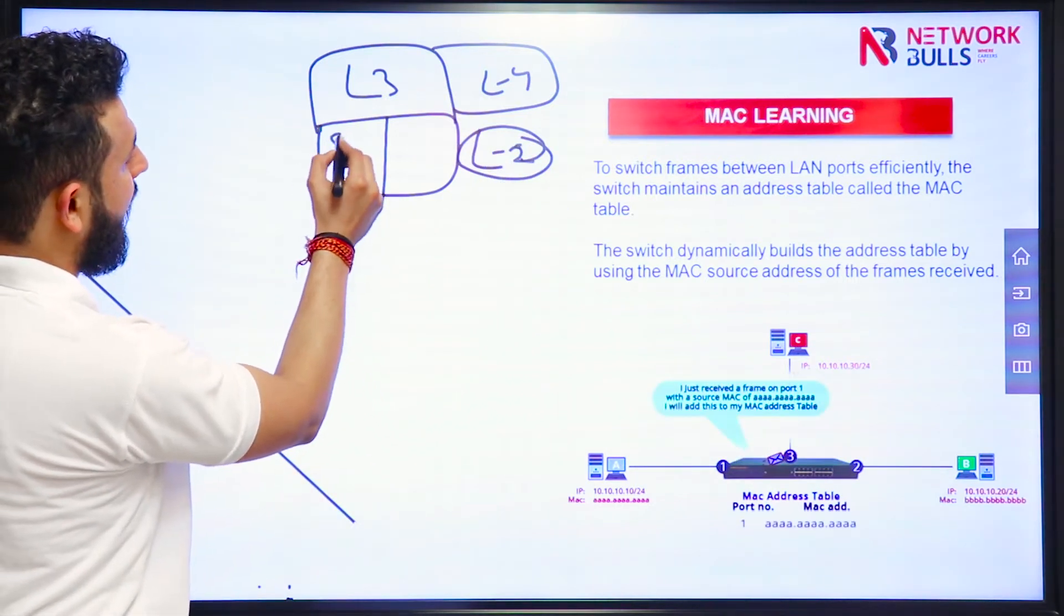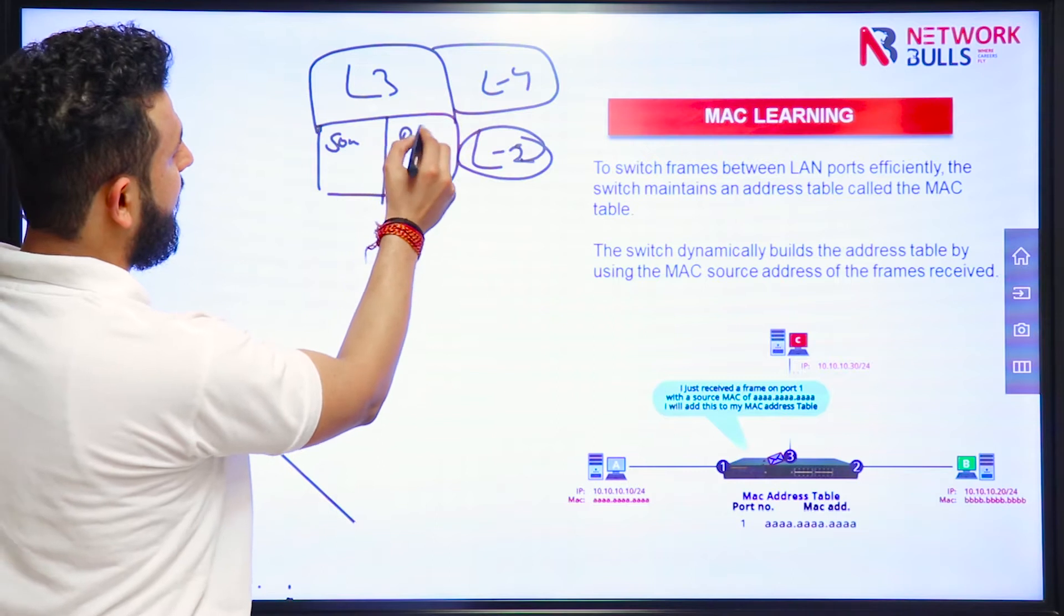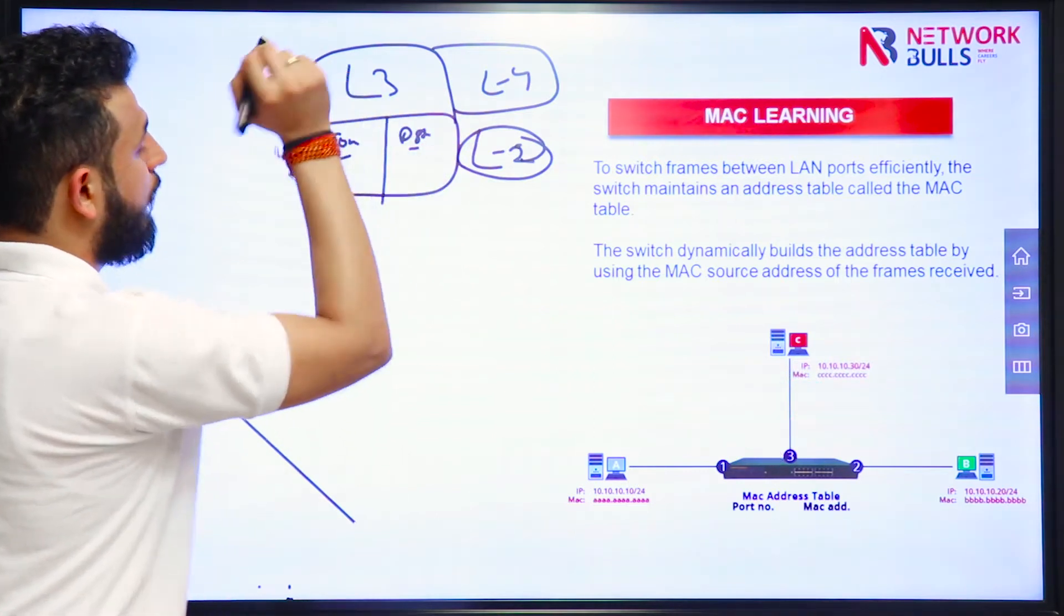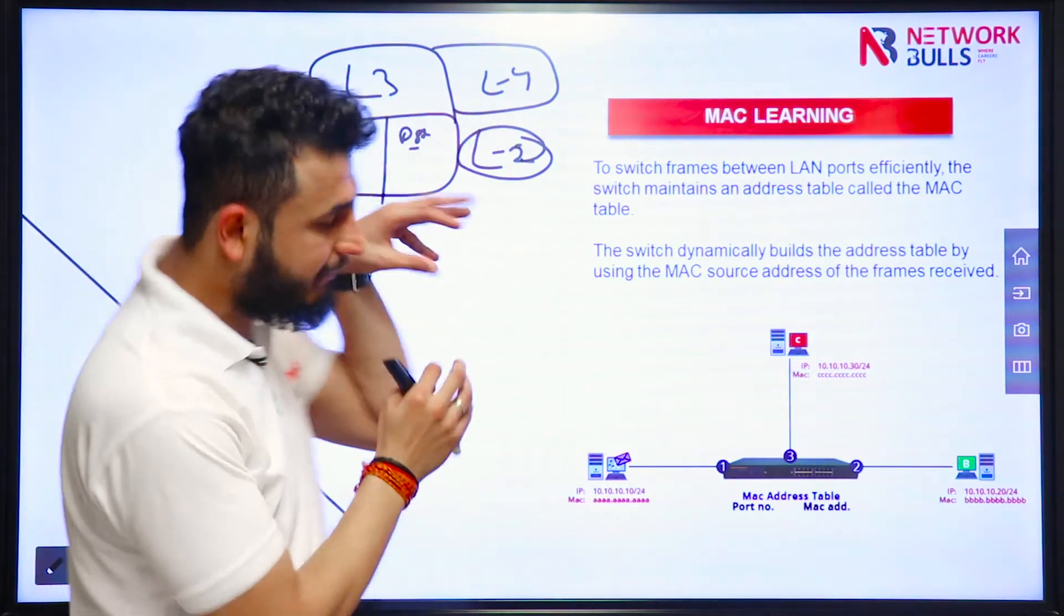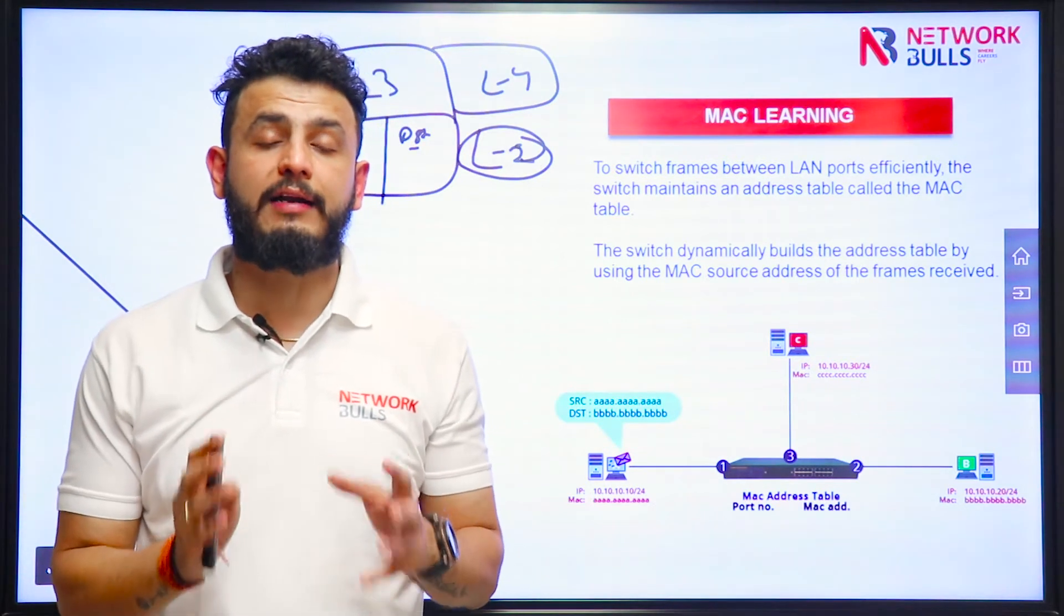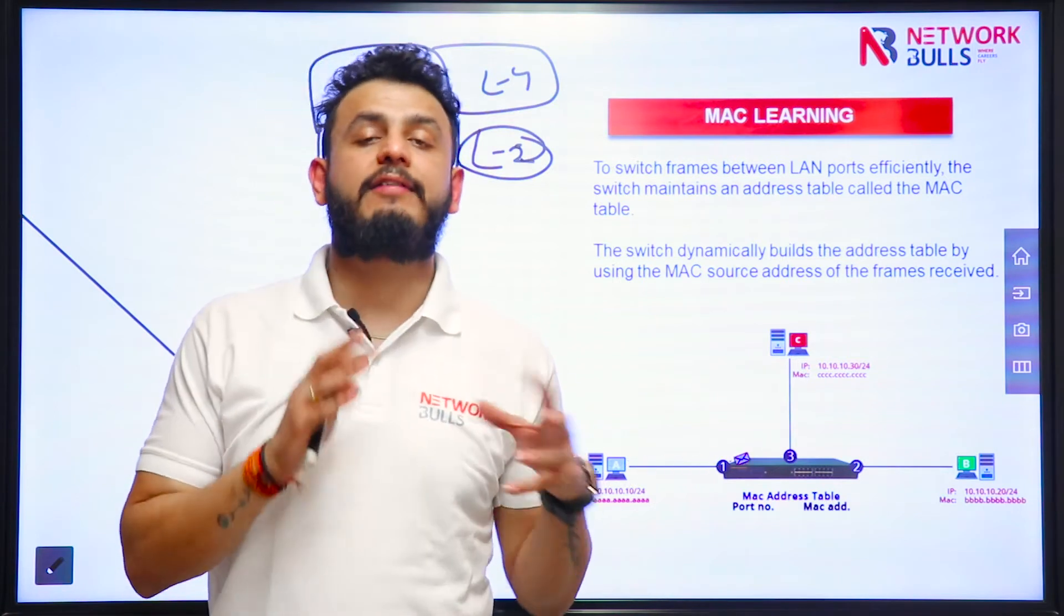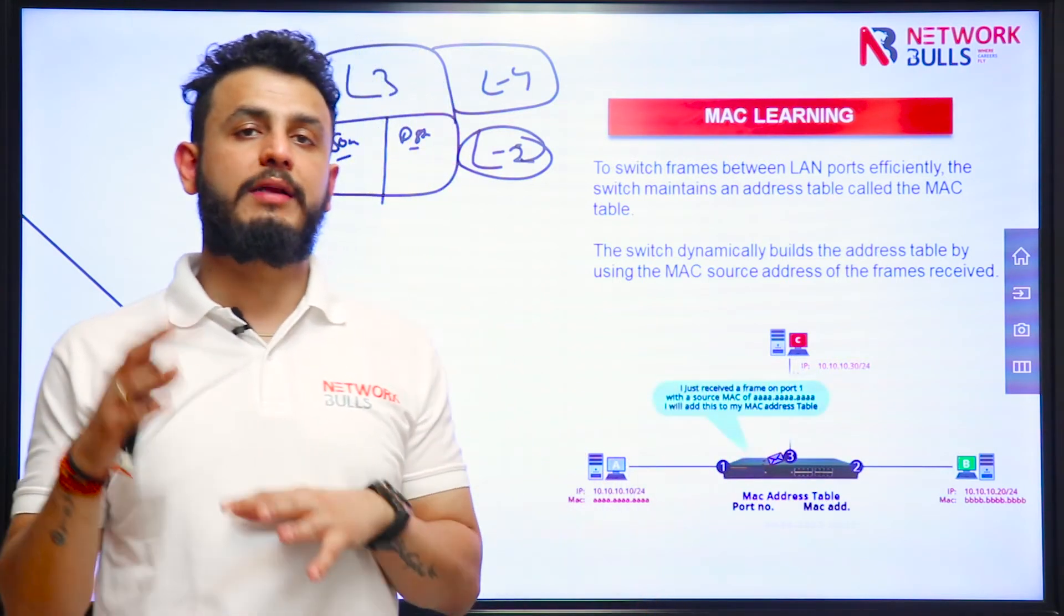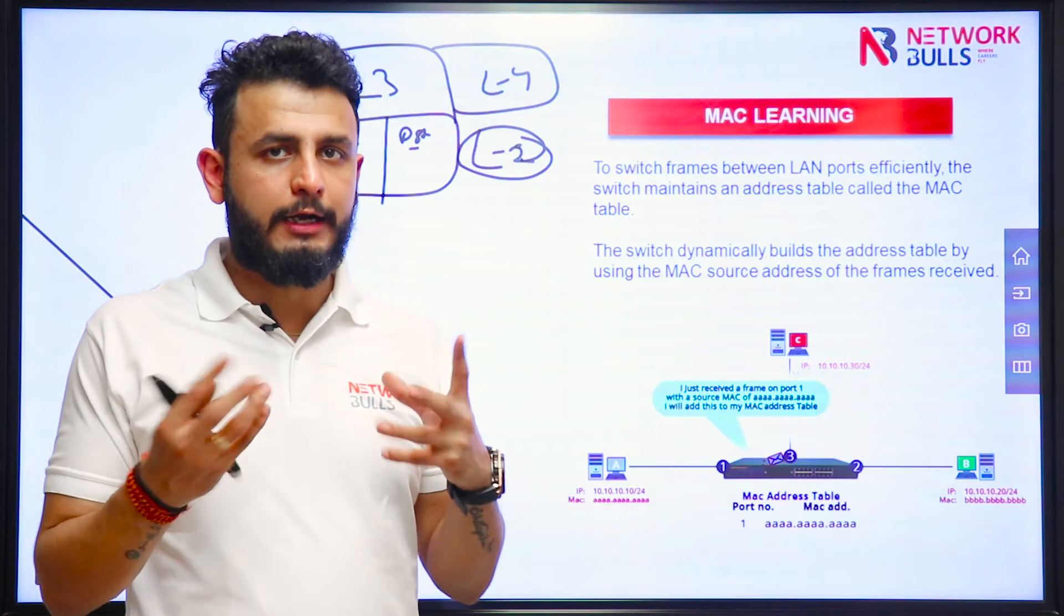There will be a source MAC and there will be destination MAC. So whenever switch will receive any frame, it will add source MAC address in a table that is called MAC address table, which is used for forwarding the traffic later on.